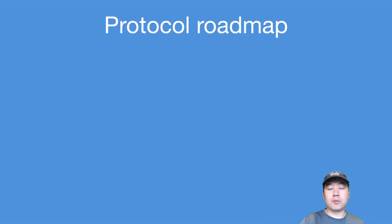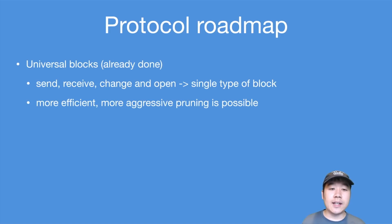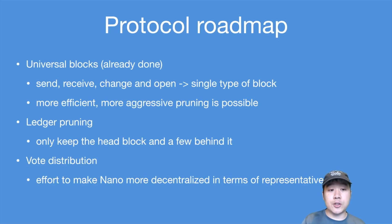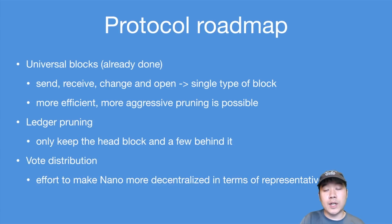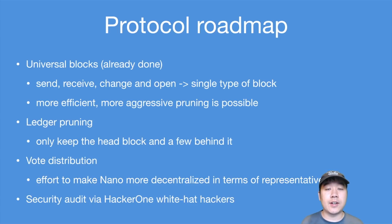On the protocol roadmap: they have already completed universal blocks, which consolidates their four different transaction types — send, receive, change, and open — into a single type of block. This makes things more efficient and allows for more aggressive pruning, reducing the amount of data nodes need to store. They're also going to work on ledger pruning in the future, where you only need to keep the head block and a few behind it instead of a long account chain history. Finally, for vote distribution, they have an effort to make Nano more decentralized in terms of the number of representatives. They've made progress since early 2018 but have more work to do. They are also doing a security audit via HackerOne, getting white-hat hackers to audit everything top to bottom to catch bugs before malicious hackers do.